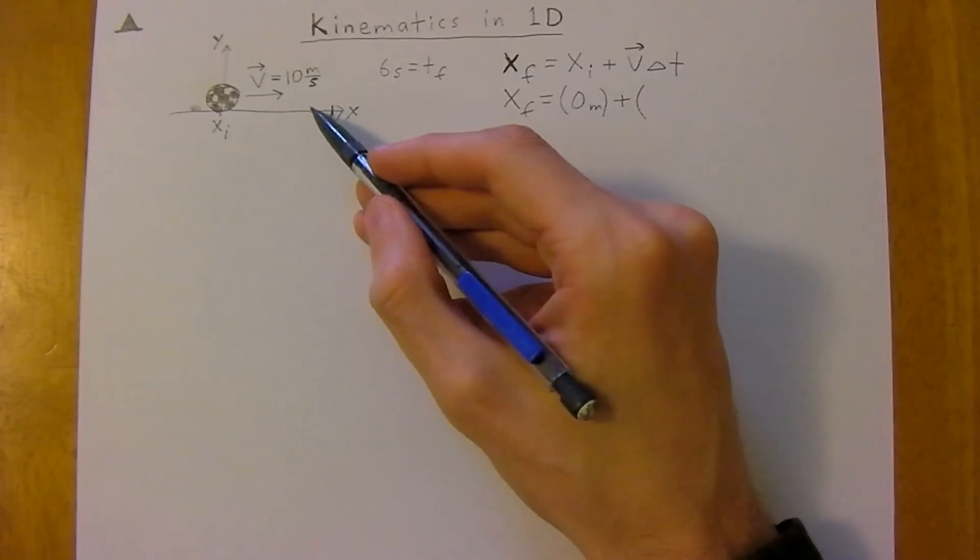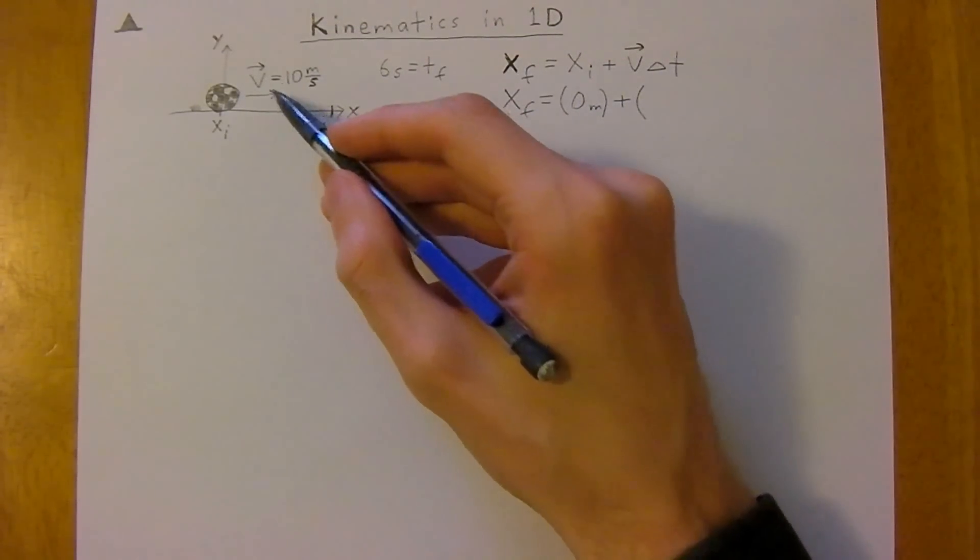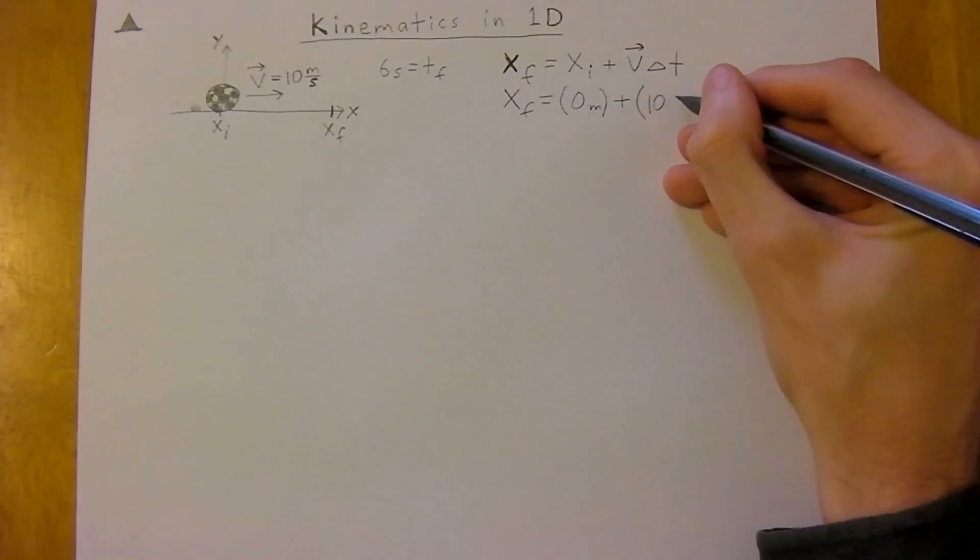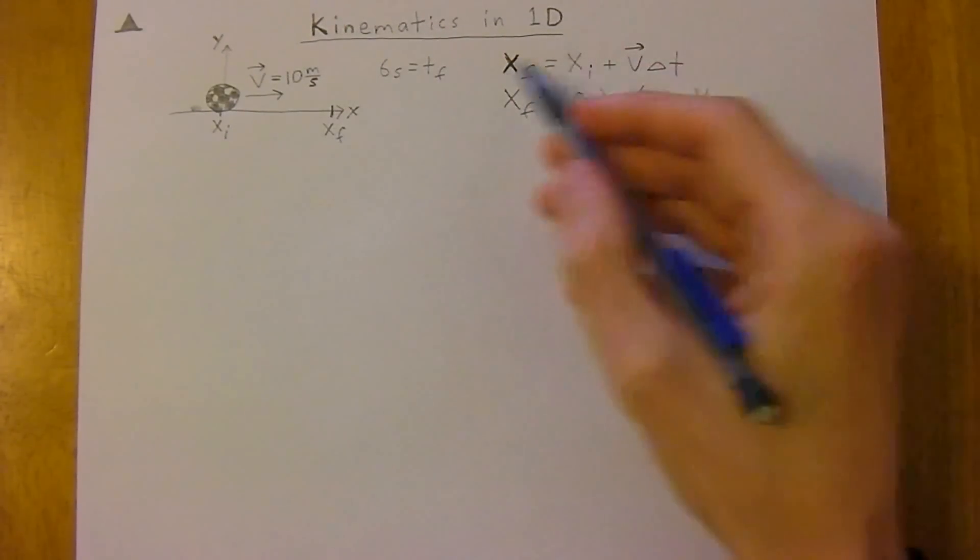Plus its velocity, and headed to the right on the x-axis is positive. If we were headed left it would be negative, but we're headed to the right, so positive 10 meters per second. And it's changed in time.